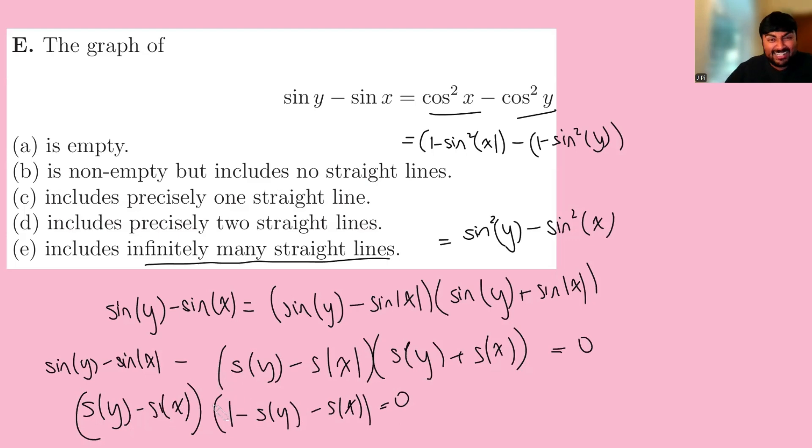Actually, it's pretty clear that it does have straight lines, in fact, has infinitely many. Let's just stare at this part here. When is this zero? Well, this is clearly zero if y equals x. But it's also pretty clearly going to be zero if y equals x plus 360 degrees, because sine is periodic with period 360 degrees.